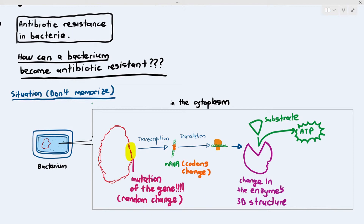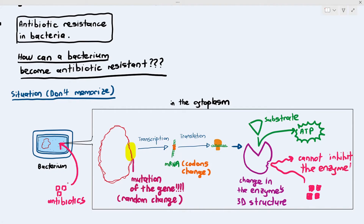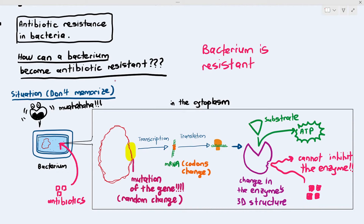The active site still looks the same, so the substrate is able to bind to the active site and produce ATP. But if I give the same antibiotics to this bacterium that has undergone gene mutation, the antibiotics cannot bind to the allosteric site because the shape of the allosteric site has changed. The antibiotic cannot inhibit the enzyme, the bacteria's enzyme can still carry out the chemical reaction, and the bacteria survives — it is resistant to the antibiotic.